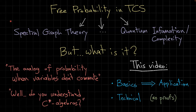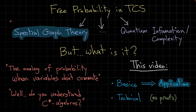It is unavoidable that the talk will be technical, but hopefully not too technical. I will hint at connections between free probability and the application I'm going to talk about, but I will not prove anything. The application we're going to focus on is an application in spectral graph theory — in particular, Ramanujan graphs.